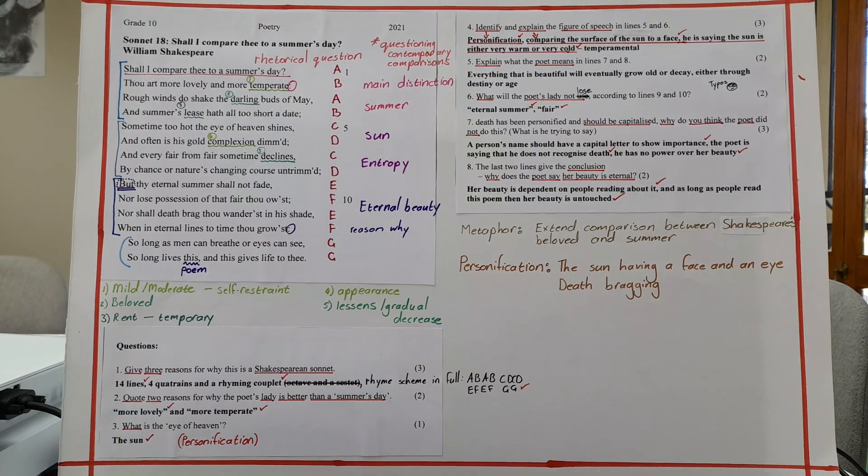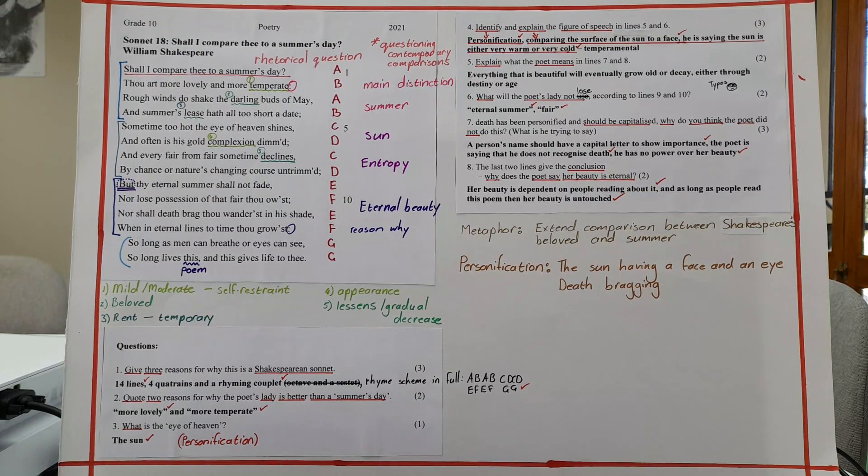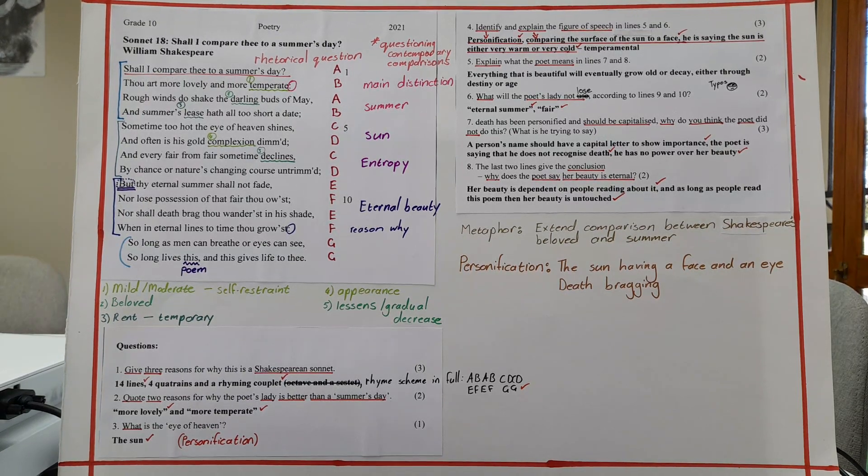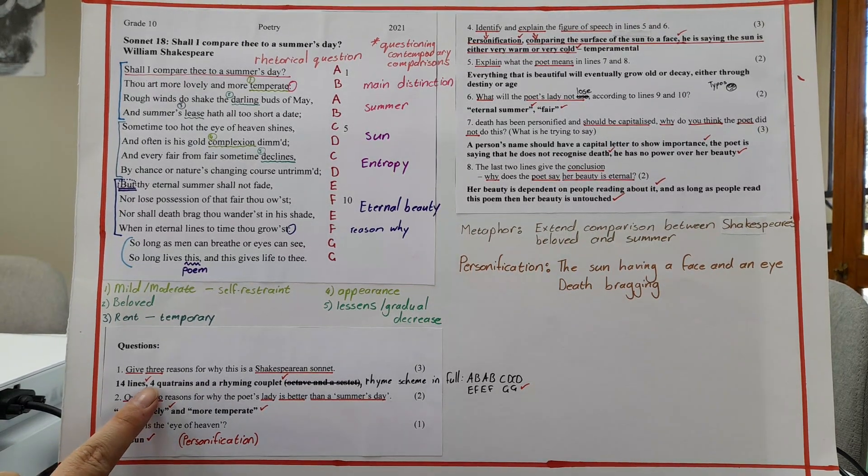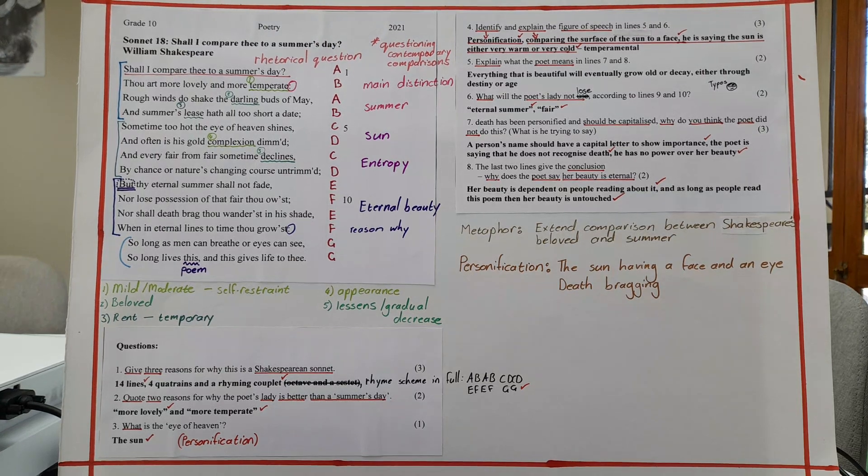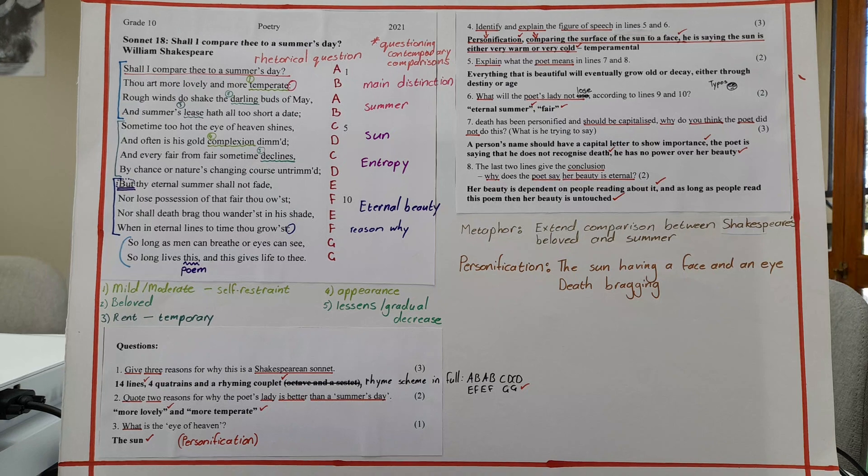Okay, so number one, three reasons for why this is a Shakespearean sonnet. So a sonnet is generally 14 lines and it's about love. So why specifically is this Shakespearean? Because there are three quatrains and a rhyming couplet. So that there already is a mistake. It should be three quatrains and a rhyming couplet. When I put up the notes and the questions and the answers for the Google Drive access, I will correct that. And a rhyming couplet.